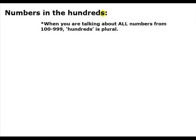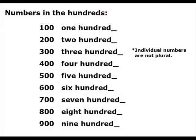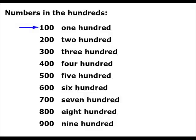When you're talking about all numbers from 100 to 999, the word 'hundreds' is plural. But for individual numbers, 'hundred' is not plural. One hundred, two hundred, three hundred, and so on.